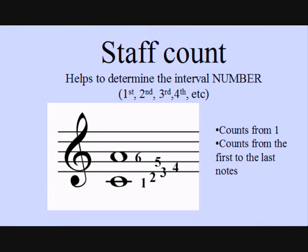An interval has a number part and a quality part. For example, if we say a minor third, the word 'minor' is the quality of the interval and 'third' is the number. In order to determine the number accurately for a written interval, we count the number of lines and spaces we pass through on the staff — we call this the staff count.